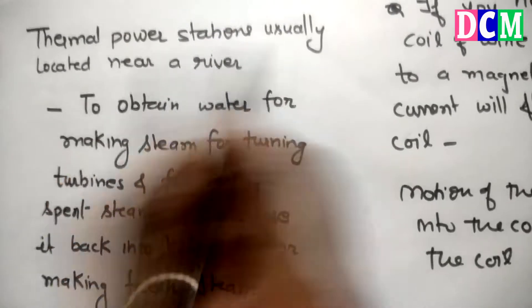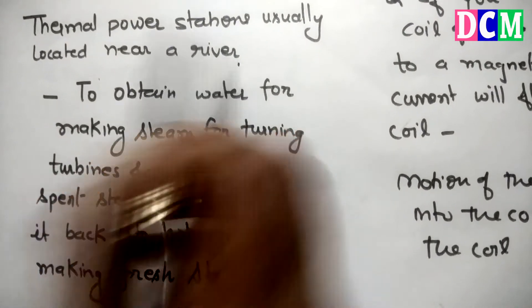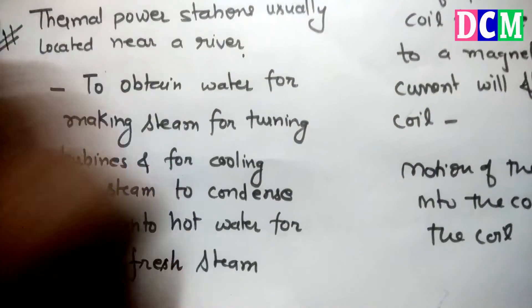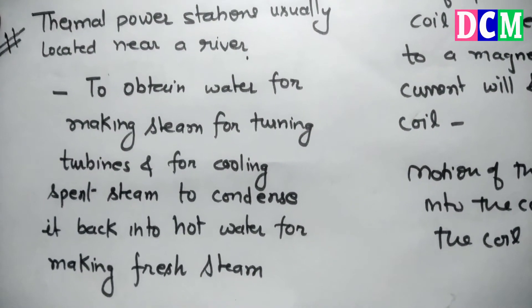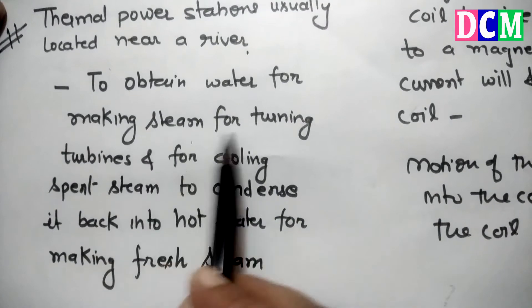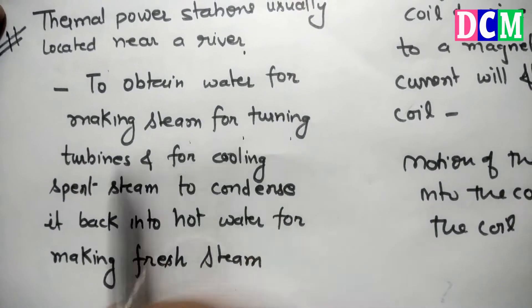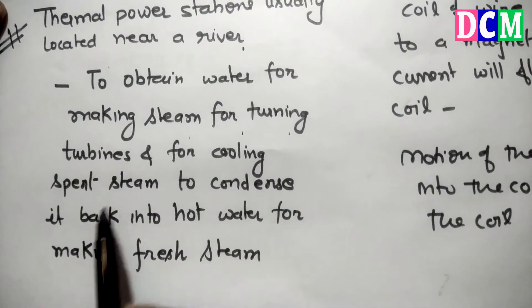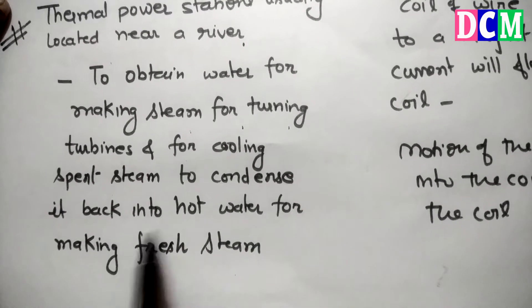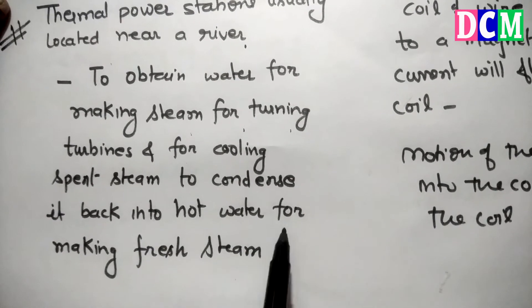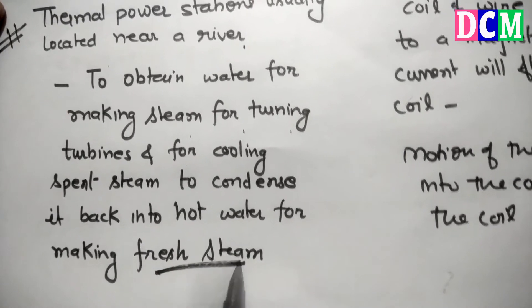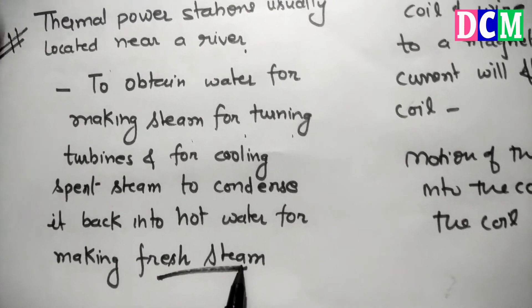A thermal power station is usually located near a river. This is a conceptual question. The concept is to obtain water for making steam, for turning turbines, and for cooling spent steam — condensing it back into hot water for making fresh steam.